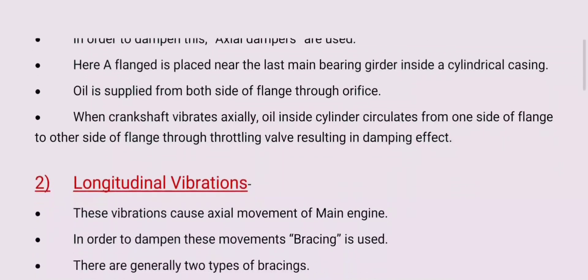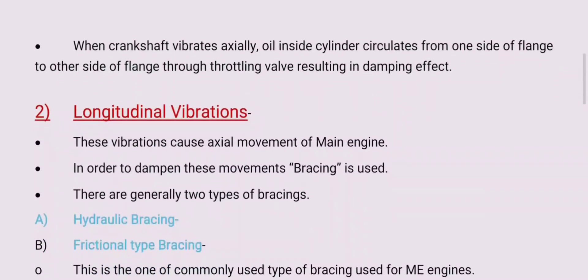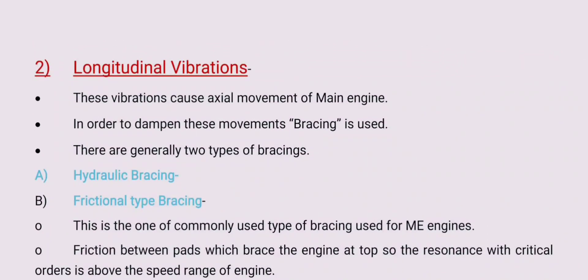The second type is longitudinal vibration. This vibration causes axial movement of the main engine. In order to dampen this movement, bracing is used. These bracings are generally placed at the top. There are generally two types of bracing: hydraulic bracing and frictional type bracing.